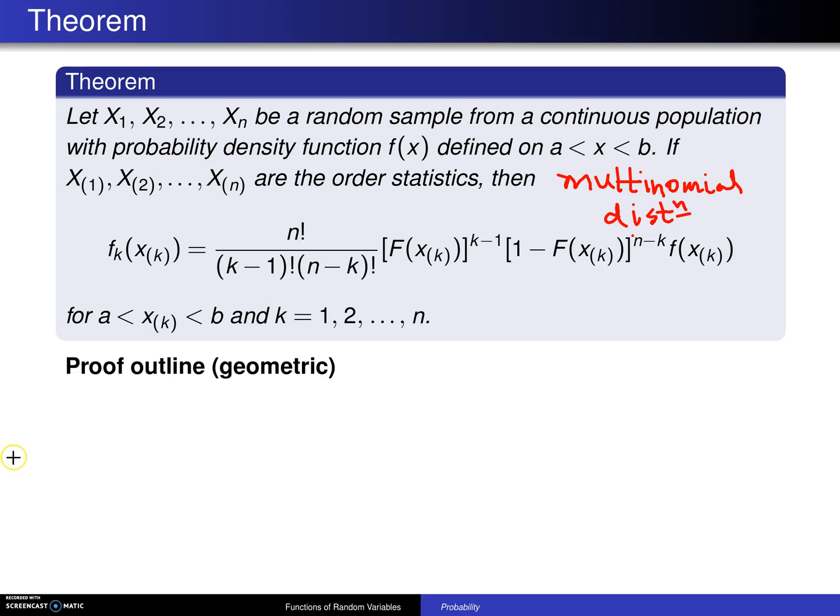In this geometric proof, here is an axis that begins at a and ends at b. Once you set that up somewhere between a and b, you know that this kth order statistic will land somewhere. So let's put that spot right here.